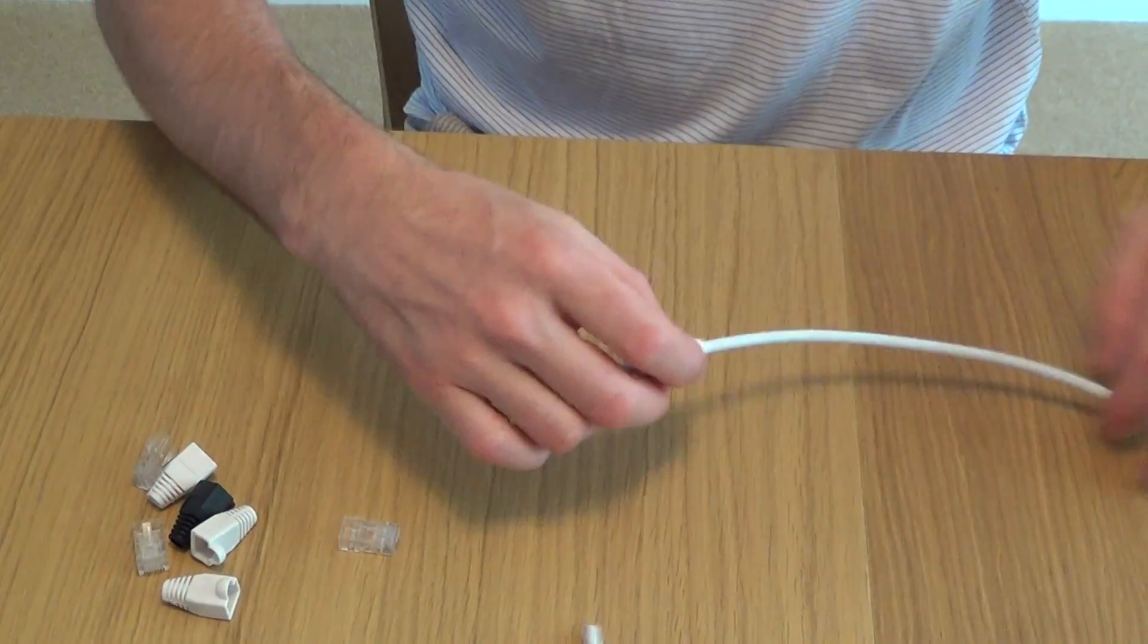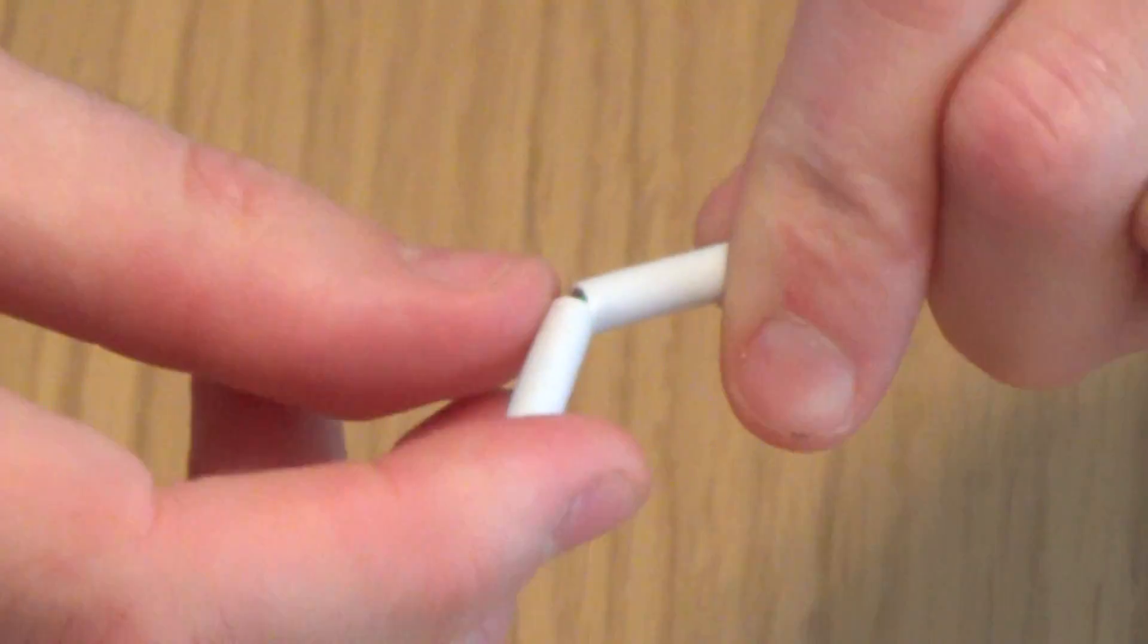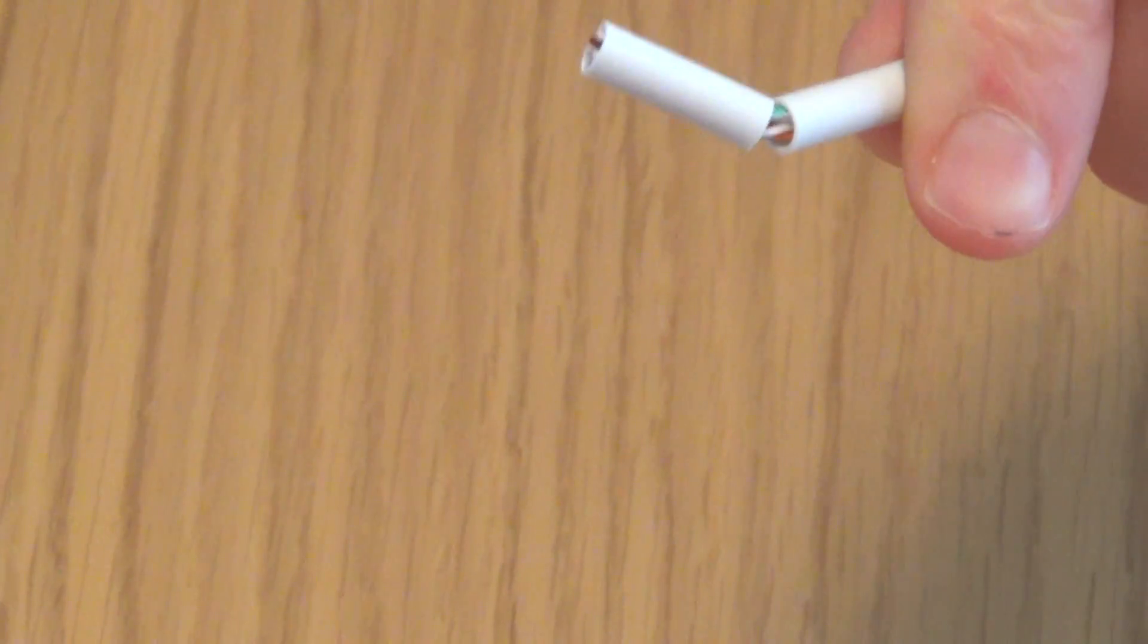So here we go, this plug's already on the cable so you just slide it on like so and then to strip the cable back, I'm using a little cable stripper and you see I haven't damaged the wires there because I can actually snap the cable.